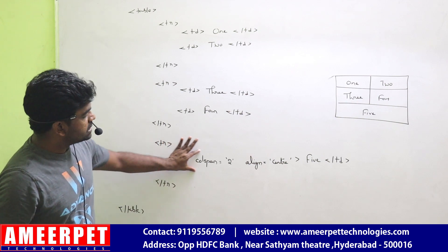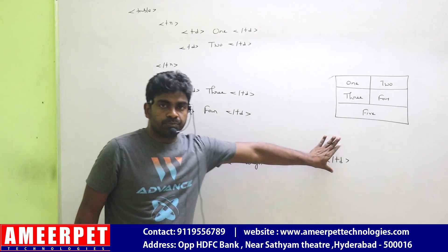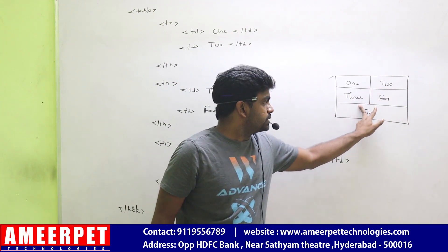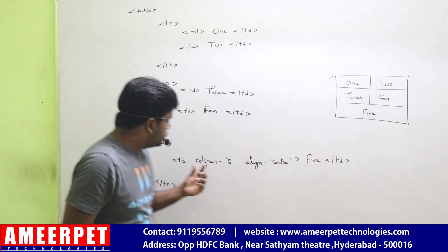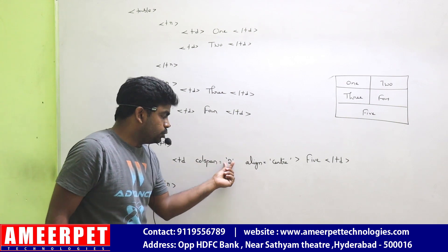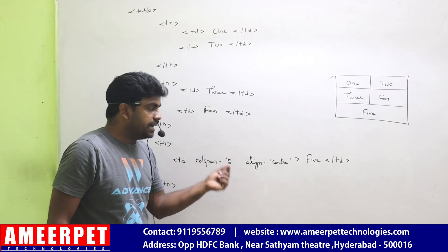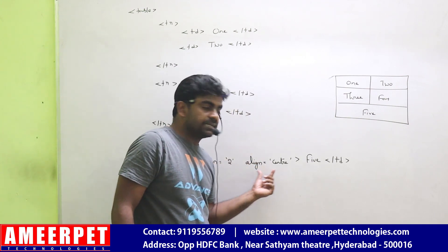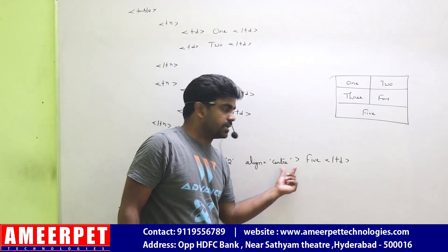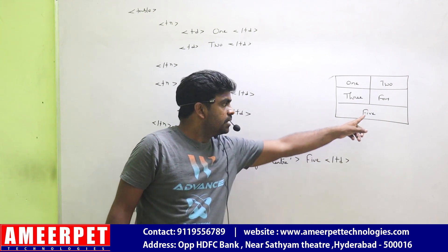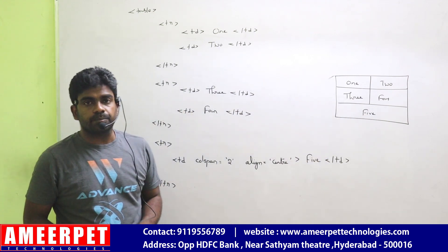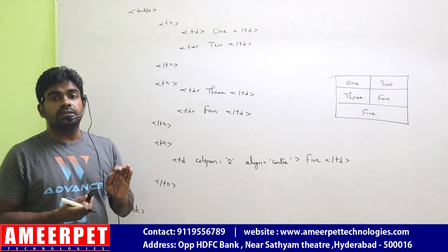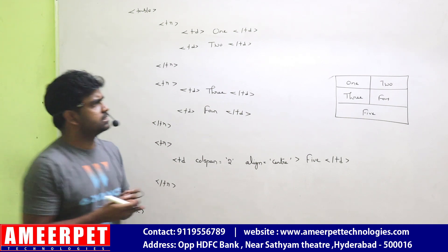Here we represent the value five as table data. Notice that in the third row only one column is present, but actually two columns are there — those two columns are merged. After merging, whatever information is present, I want to make it center aligned. This is the data which I want to display in that merged column.